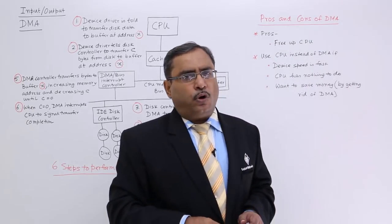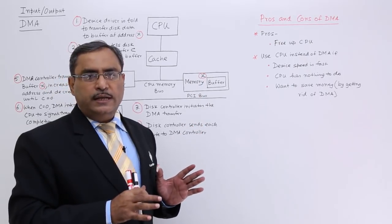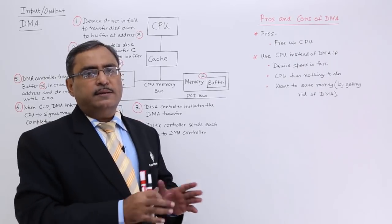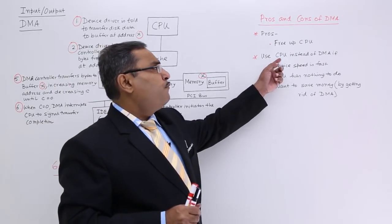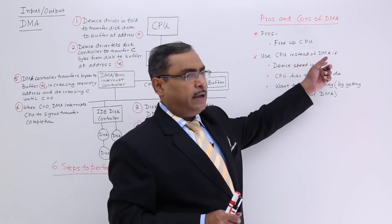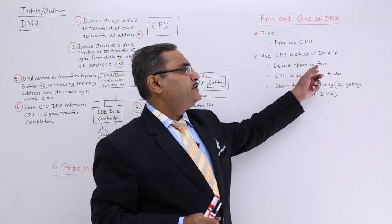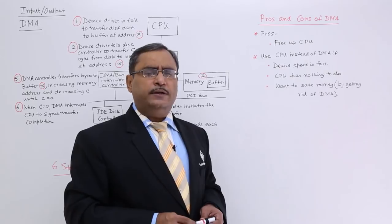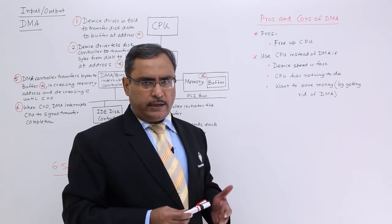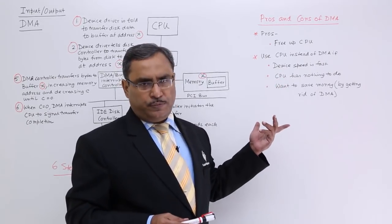What are the pros and cons of this DMA? The main advantage of using DMA is to make the CPU free from the IO transfer. But we should go for the CPU instead of DMA in three different cases. When the device speed is fast enough, when the device is a very high speed device it can easily be communicable with the CPU directly because there will be no such speed mismatch. In that case you can go for the CPU.